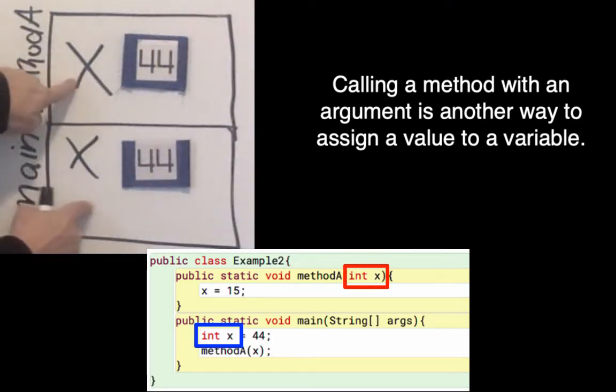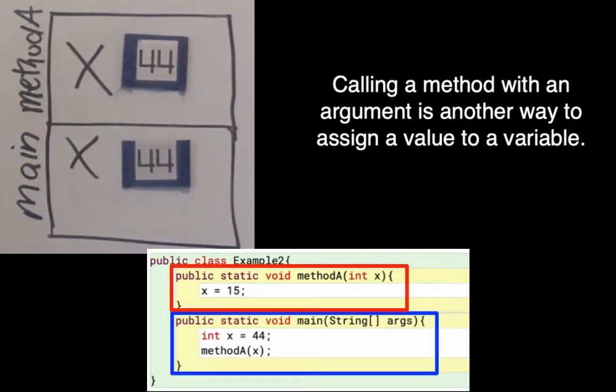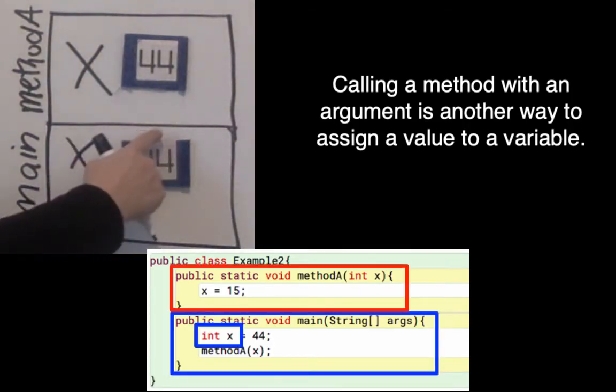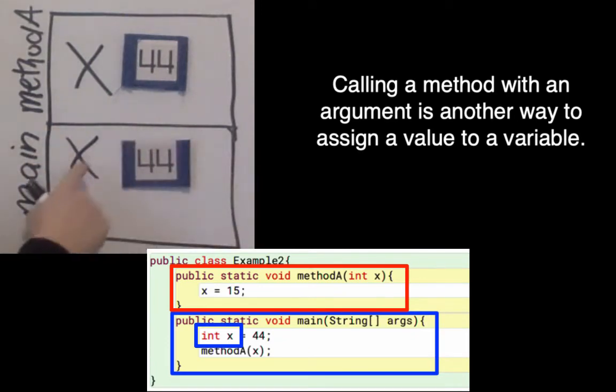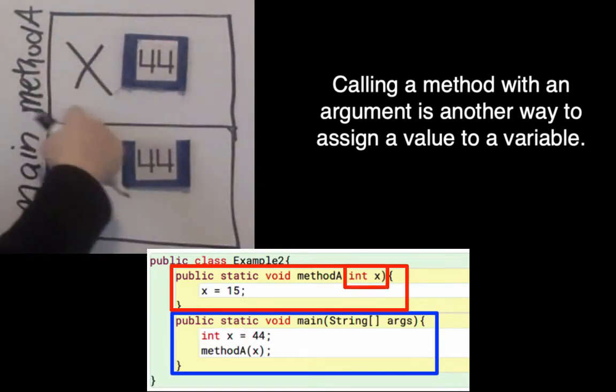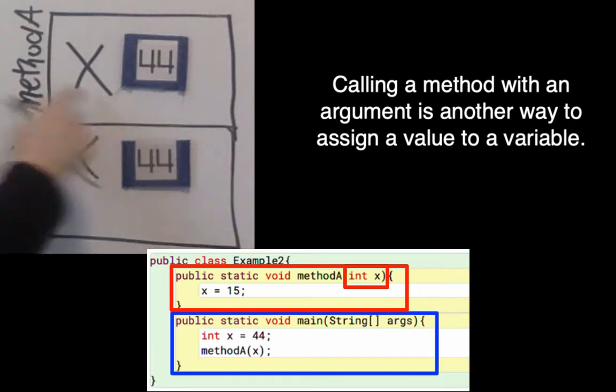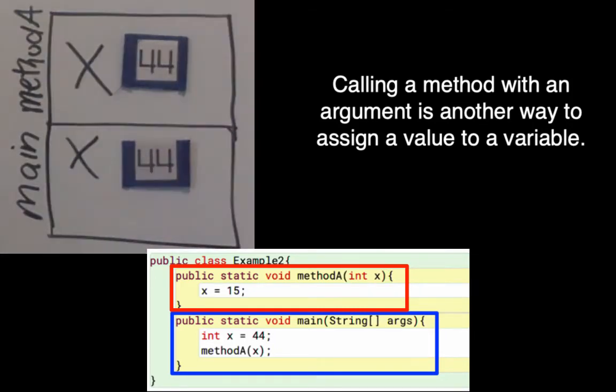And here we can have two different independent variables named x because they're each in a different method. In the local variables that I have in main, I have x. And in the local variables that I have inside of methodA, I have a variable named x. And we say that these two variables have different scopes.